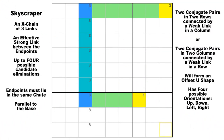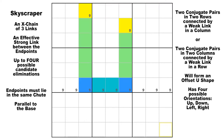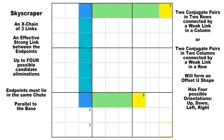Lastly, we come to the skyscrapers, which are the most powerful of these three types of three-link X-chains. As you know, there will be no diagonal links in a skyscraper. It will always be composed of two rows and one column, or two columns and one row. The only thing you have to remember is that the two endpoints must lie in the same chute. There won't be any eliminations possible if the two endpoints lie in different chutes.